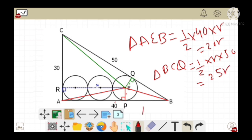The area of triangle AEC equals 1/2 times 5R times 30, which equals 75R.